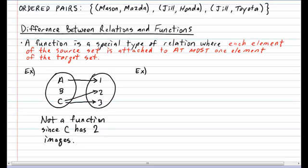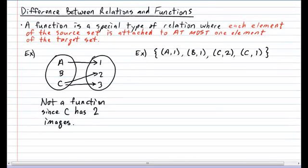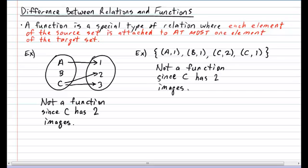Let's take a look at another example. Let's try looking at some ordered pairs. Suppose I give you the following ordered pairs: a is connected to one, b is connected to one, c is connected to two, and c is also connected to one. Here's another example of a relation that is not a function. Why? Well, if you look at the element c, it's got two connections. It is connected to two, and it's connected to one. This is not a function since c again has two images.